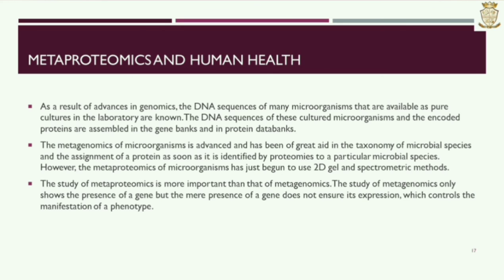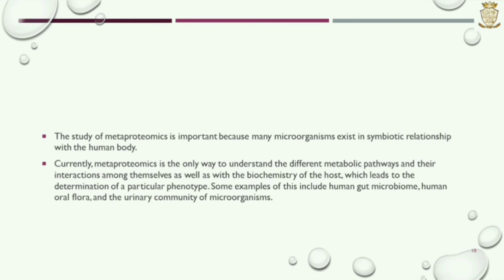However, metaproteomics of microorganisms has just begun to use 2D gel and spectrometric methods. The study of metaproteomics is more important than that of metagenomics. The study of metagenomics only shows the presence of a gene, but the mere presence of a gene does not ensure its expression, which controls the manifestation of phenotype. Metaproteomics is important because many microorganisms exist in symbiotic relationships with the human body. Currently, metaproteomics is the only way to understand the different metabolic pathways and their interactions among themselves as well as with the biochemistry of the host, which leads to the determination of a particular phenotype.